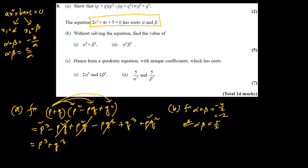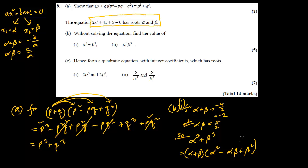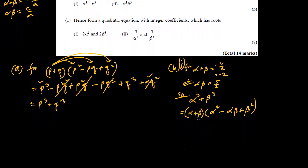We know these values from the given equation. For part b1, we need to find α³ + β³. Using the identity from part 8a, instead of p³ + q³ we can write (α + β)(α² - αβ + β²). We know α + β = -2 and αβ = 5/2. For α² + β², we use the identity (α + β)² - 2αβ = α² + β².